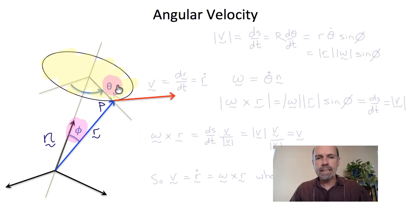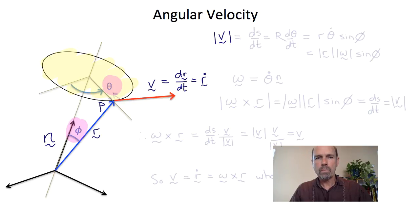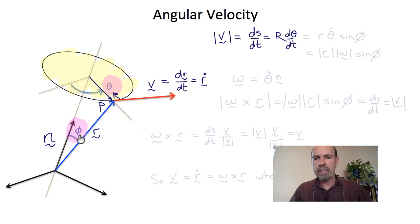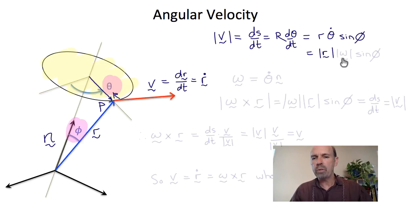The position of P is theta, and the velocity vector tangent to the circle, v, is dr/dt or r-dot. The magnitude of v is ds/dt, where s is arc length around the arc, which is r dθ/dt. Here r is the radius in the plane of rotation of point P, which is r sin φ. So ds/dt equals r·θ-dot·sin φ, where r is the magnitude of the position vector and θ-dot is the magnitude of the angular velocity vector ω.